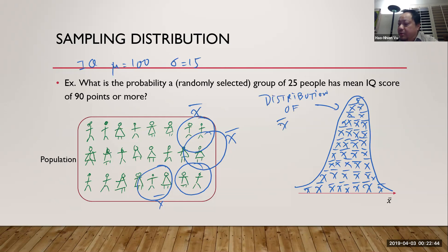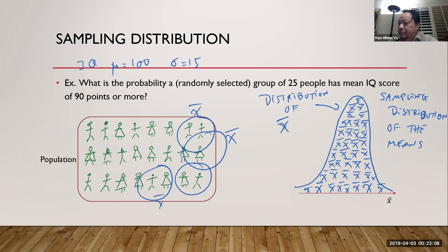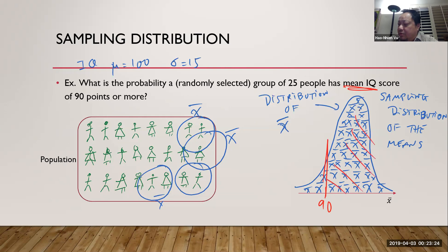Because x-bars are sample means, we call it the sampling distribution of the means. To answer this question, we compute the probability that the mean IQ — x-bar — is more than 90. We mark off 90 and compute the area under the curve. That area is the probability that x-bar is greater than or equal to 90.